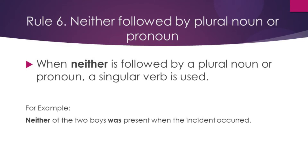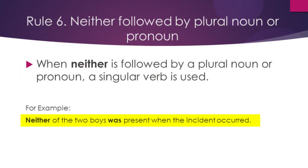Rule number six: neither followed by a plural noun or pronoun. When 'neither' is followed by a plural noun or pronoun, we use the singular form of the verb. For example: neither of the two boys was present when the incident occurred. Neither of them was present, so we use the singular form of the verb — 'was' — even though it is followed by a plural noun.